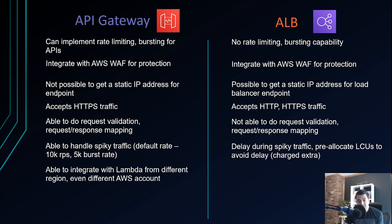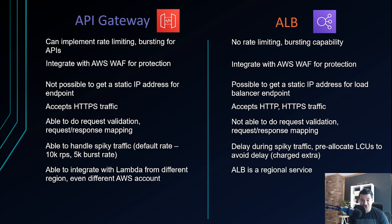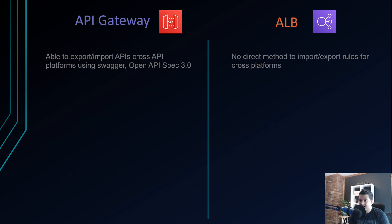API Gateway can integrate with Lambda from a different region or even a different AWS account — so your API Gateway in one account can call a Lambda in another account. ALB is a regional service, so even within the same account, ALB can only communicate with backend services like Lambda or EC2 running within the same region; it cannot go cross-region or cross-account.